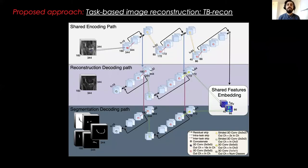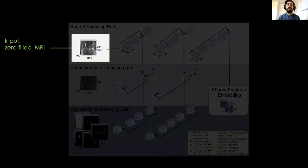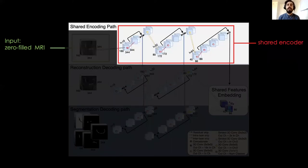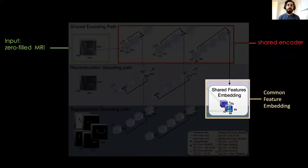This is the architecture that we propose. We name it the Birecon. The network consumes zero-filled undersampled MRIs. It presents a shared feature encoder along which there are residual blocks. At its bottom, there is a common feature embedding.